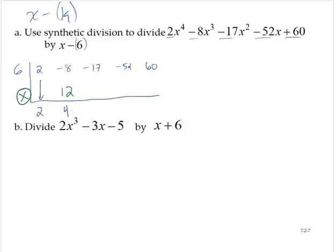Multiply, 4 times 6 is 24. Add, negative 17 plus 24 is 7. Multiply, 7 times 6 is 42. And add,